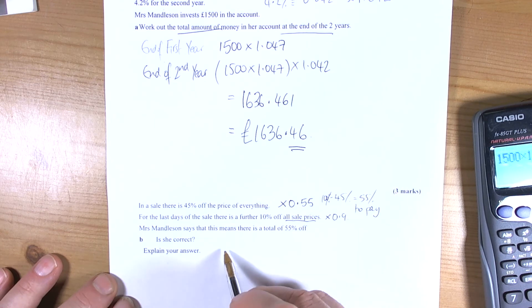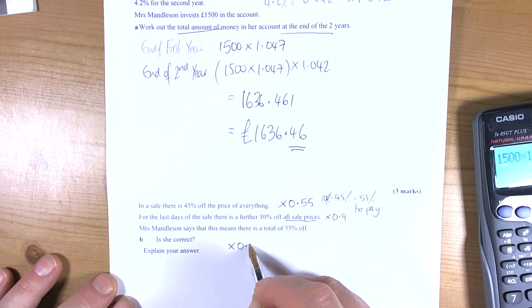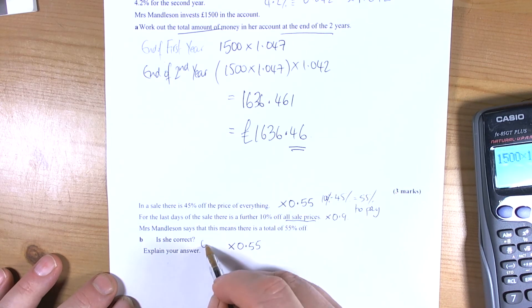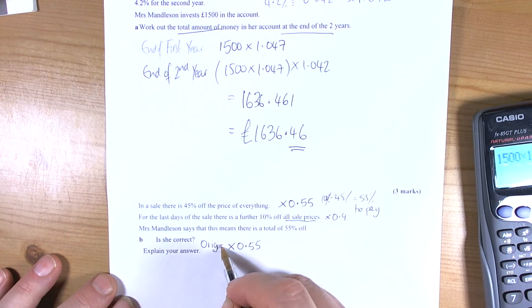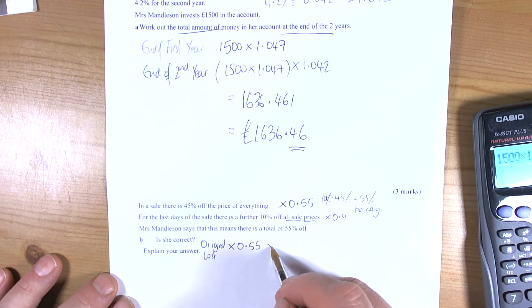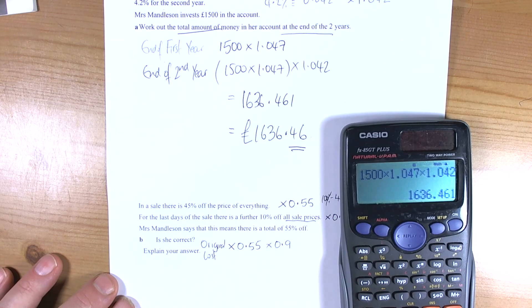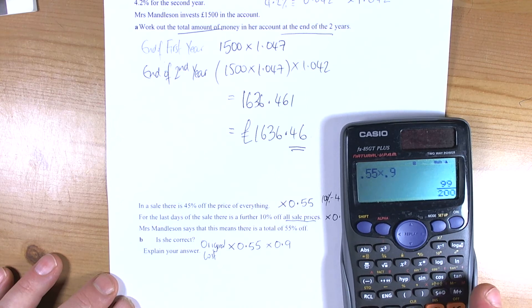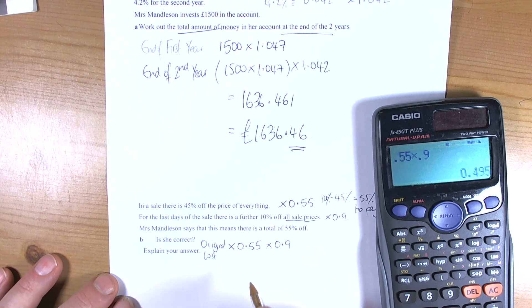So 0.55 is what we had to pay of the original price. So we had an original cost with 55% left to pay, and then we had 0.9. So if we look at the combined effects of those two things, 0.55 times 0.9 equals 0.495.